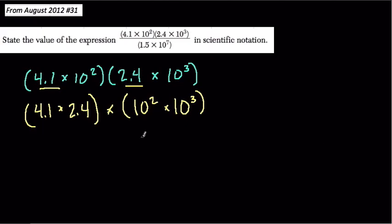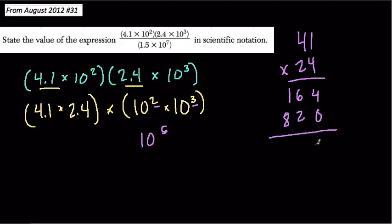If I deal with the powers of 10 first, that's 10 to the fifth, right? We add those exponents. Now, 41 times 24: 4 times 1 is 4, 4 times 4 is 16. Placeholder. 2 times 1 is 2, 2 times 4 is 8. Add them up: 4, 8, 9.